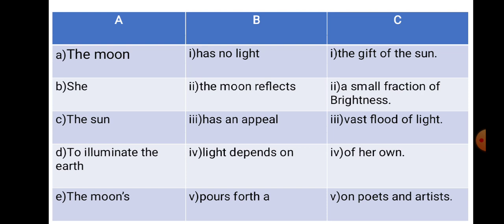Now you see the second one. In column A: A — the moon; B — she; C — the sun; D — to illuminate the earth; E — the moon's. In column B: 1 — has no light; 2 — the moon reflects; 3 — has an appeal; 4 — light depends on; 5 — pours forth. In column C: 1 — the gift of the sun; 2 — a small fraction of brightness; 3 — vast flood of light; 4 — of her own; 5 — on poets and artists.